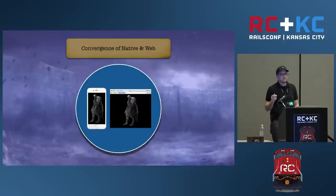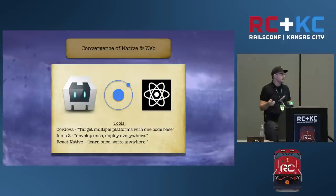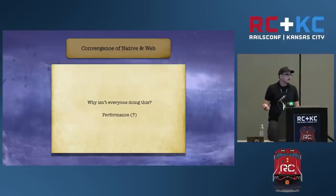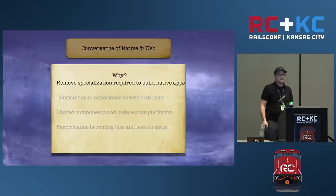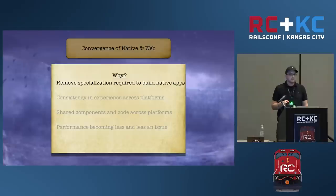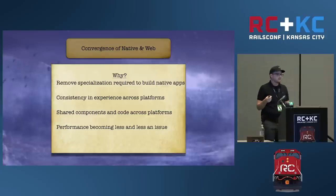Now let's talk about the convergence of web and native development. Cordova, Ionic 2, and React Native are all tools that allow you to build apps for native devices using traditional web tools like HTML, CSS, and JavaScript. Historically, there's been a hesitation to use these tools because of the performance of JavaScript — it's hard to emulate the performance of a native experience, but this is changing. For example, we used React Native to write Pocket Conf, and it worked great. The benefits are removing the specialization required to build native apps — no one wants to write Objective-C — giving consistency in the experience across platforms, allowing you to share components and code across the code base, and performance is no longer an issue.